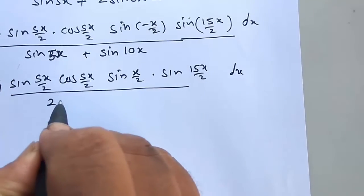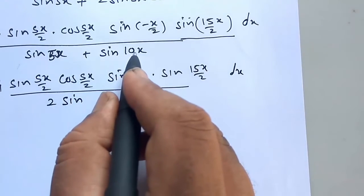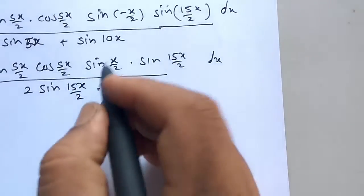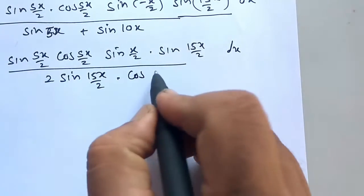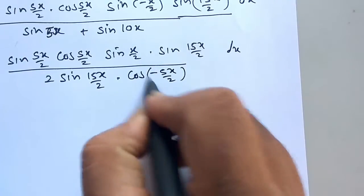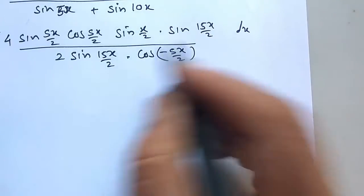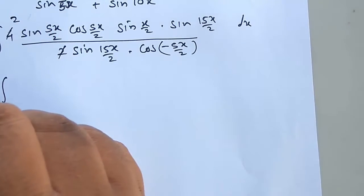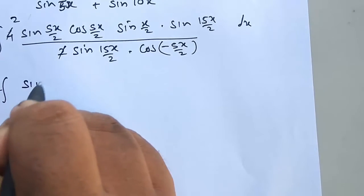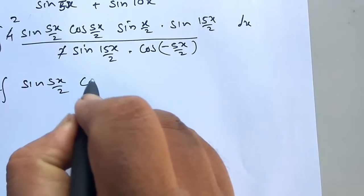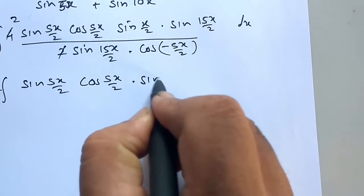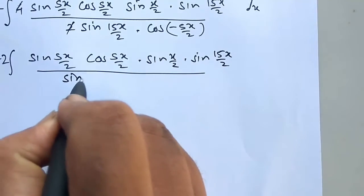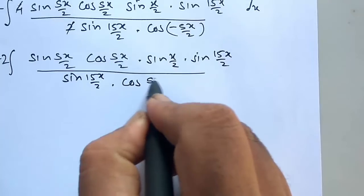Sin C plus sin D equals 2 sin((5x + 10x)/2) into cos((5x - 10x)/2), which is 2 sin(15x/2) into cos(minus 5x/2). Cos of minus theta has no change, it is cos theta. So this equals minus 2 sin(5x/2) into cos(5x/2) into sin(x/2) into sin(15x/2) divided by sin(15x/2) into cos(5x/2) dx.